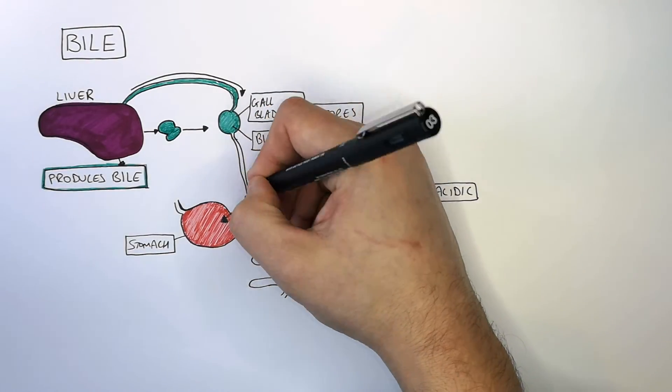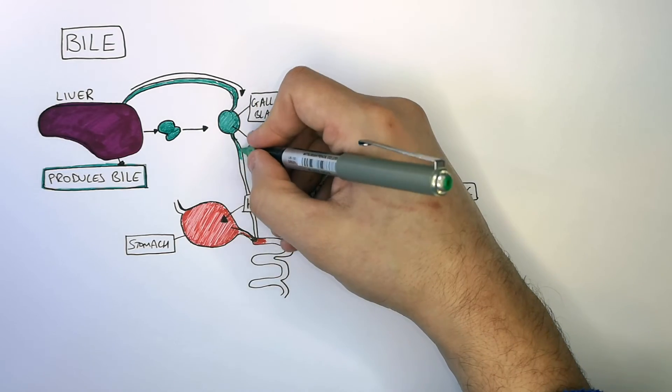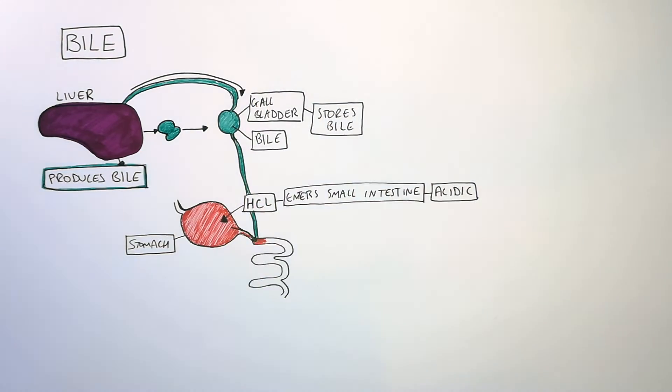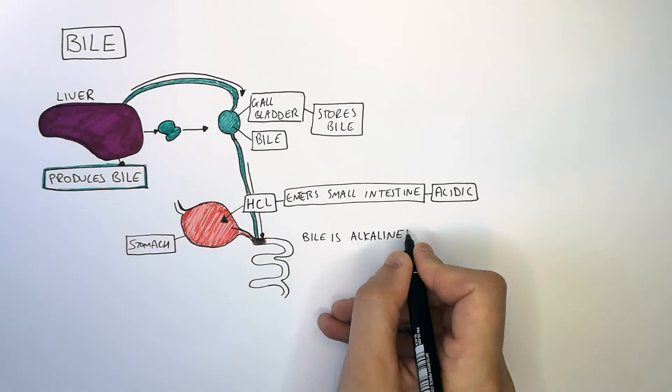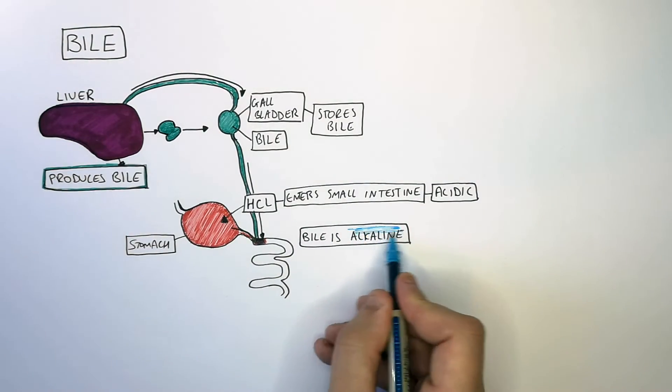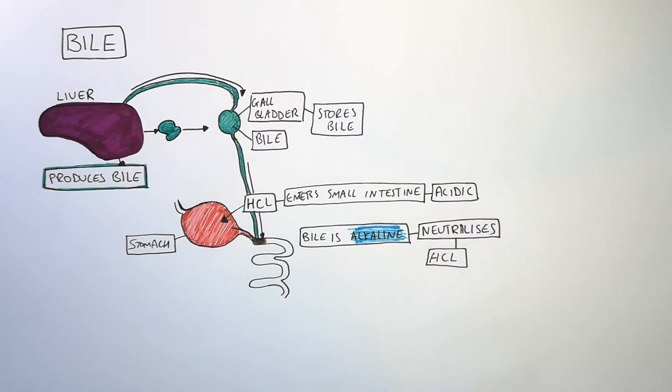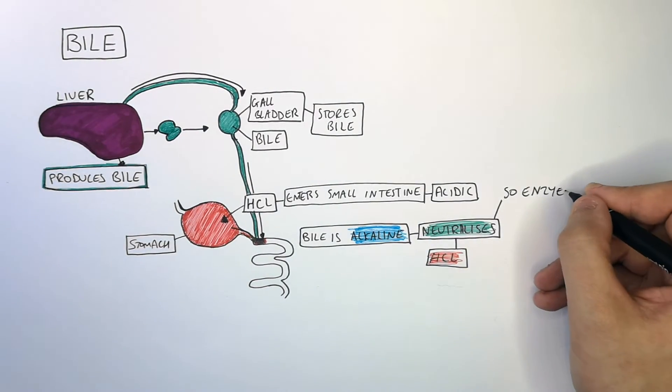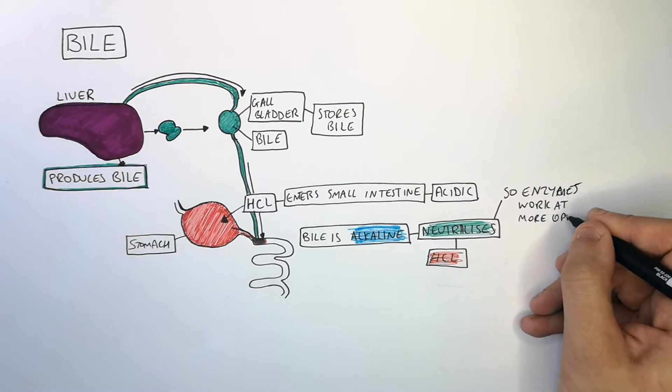The bile that is produced in the liver and stored in the gallbladder is then transported to the top of the small intestine, whereby the bile is alkaline. So the alkaline bile neutralizes the acidic acid that comes from the stomach. This is so enzymes work at a better optimum pH.